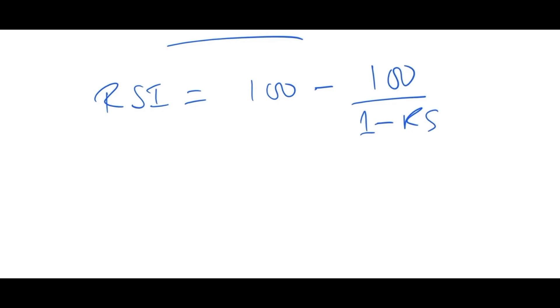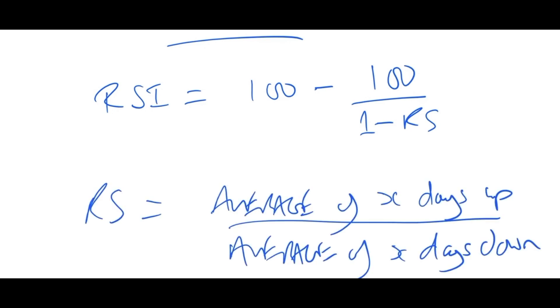So what is RS in this equation? Let me explain because this is really at the core of the RSI. RS is the average of X number of days up divided by the average of X number of days down.